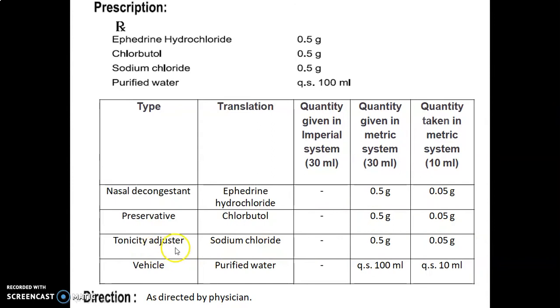Sodium chloride used as a tonicity adjuster, 0.5 gram, multiply it with factor, we will get 0.05 gram. Purified water used as a vehicle, quantity sufficient up to 100 ml, and for preparing 10 ml we will require quantity sufficient up to 10 ml.